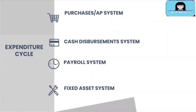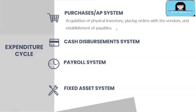Let's start with the expenditure cycle. The first subsystem is the purchasing system, sometimes called the AP system. It involves the acquisition of physical inventory, placing orders with vendors, and establishment of payables. In some systems, the purchasing system is separate from the AP system — the purchasing system solely handles purchasing data such as purchase requisitions, purchase orders, and receipts of inventories, while the AP system handles the recognition of accounts payable by processing accounts payable vouchers supported by approved purchase orders and receiving reports.